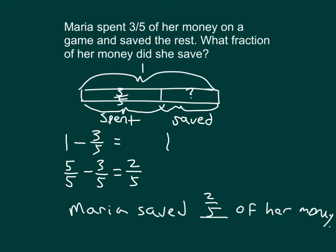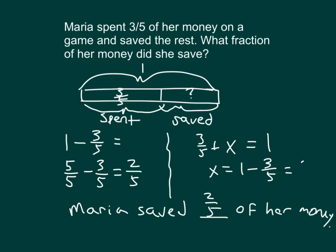Another way to look at this is with a variable. We have 3 fifths plus the amount saved — let's indicate that as x — equals 1. Solving for that, I subtract 3 fifths from both sides, so x equals 1 minus 3 fifths, which equals 2 fifths of her money. 3 fifths and 2 fifths does equal 1. Does it make sense that she saved less than all of her money? Yes — 2 fifths makes sense, and 2 fifths and 3 fifths does add up to 1.